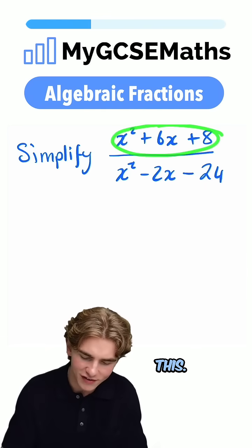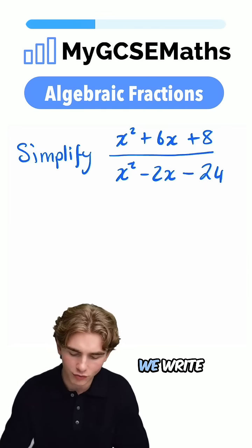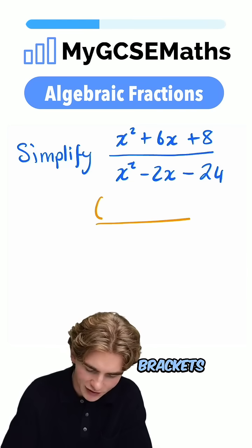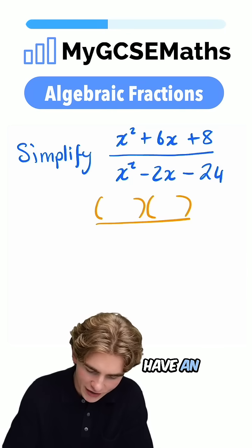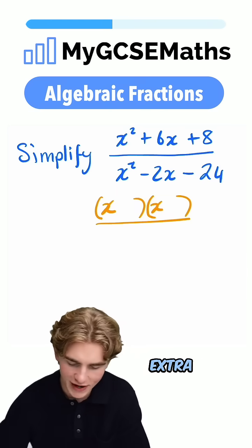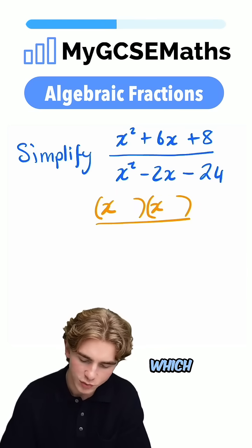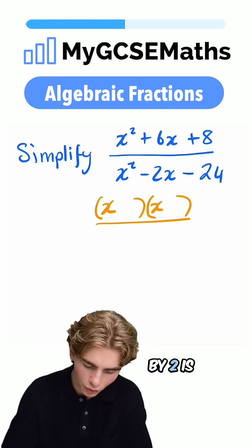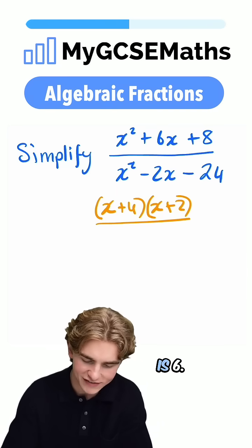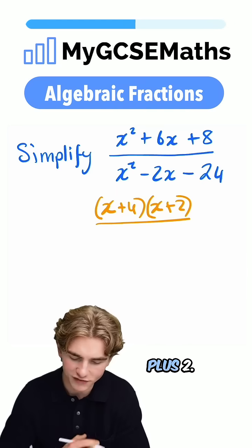So let's see if we can factorize this. When we factorize a quadratic, we write it as two brackets multiplied by each other. Here we have an x squared at the front, so we're going to have an x at the front of each bracket. We need two numbers which multiply to give 8 and add to give 6. 4 times by 2 is 8 and 4 plus 2 is 6, so we can write this top as x plus 4 times by x plus 2.